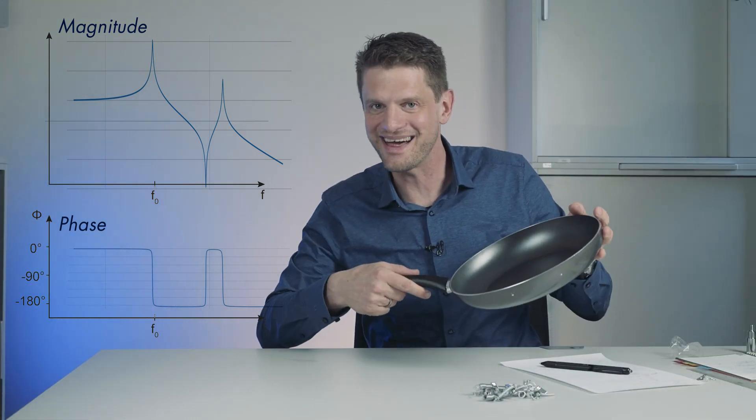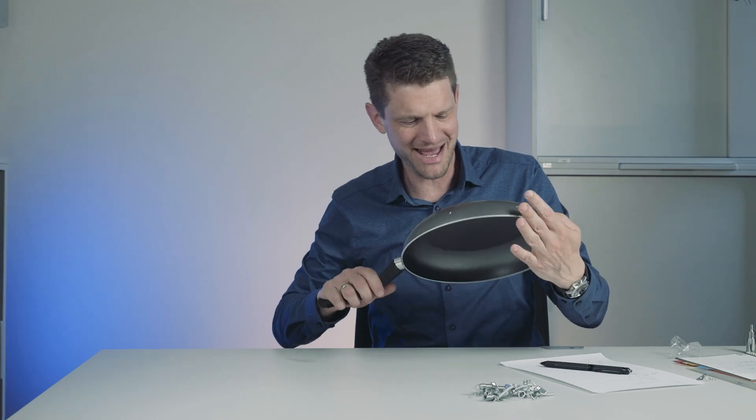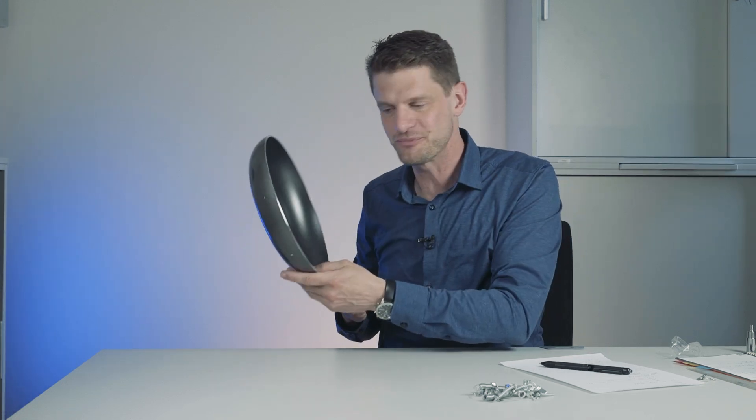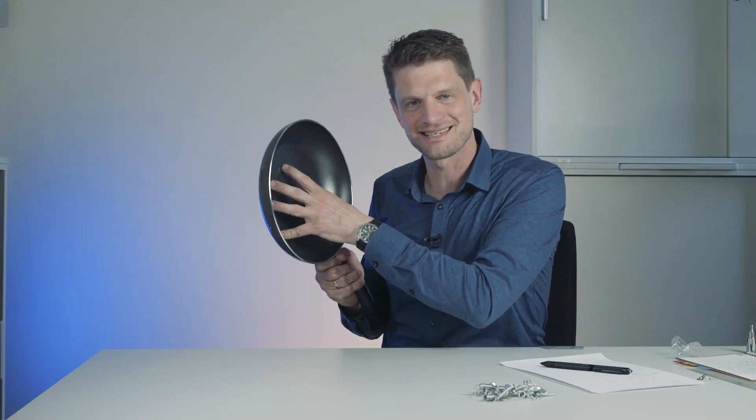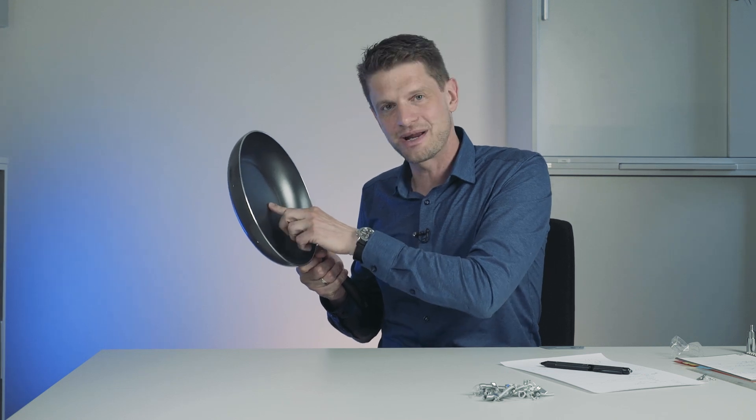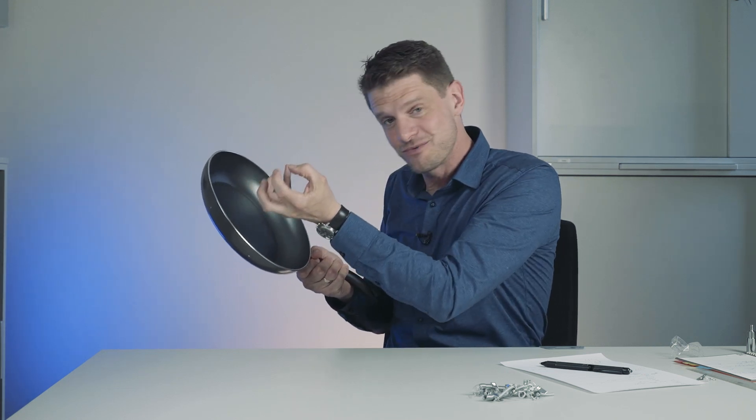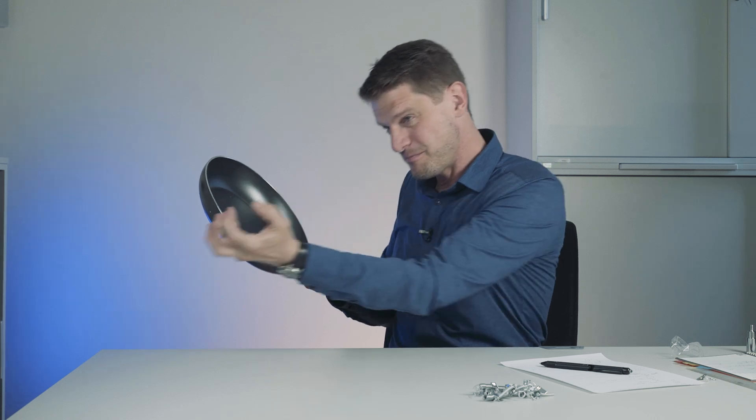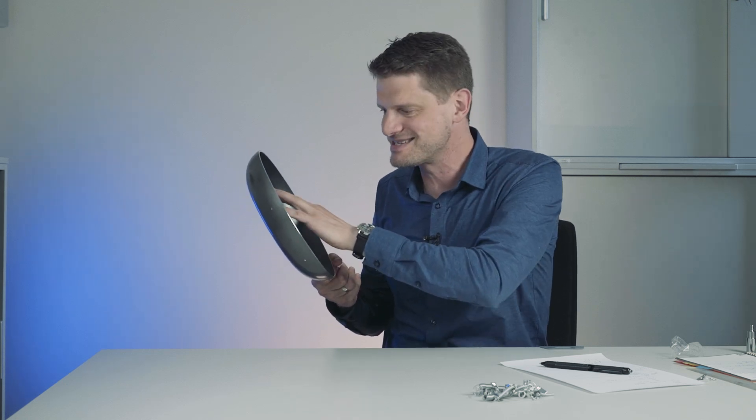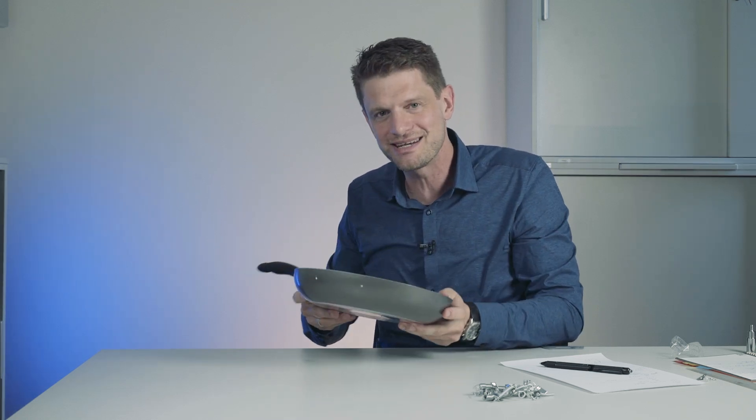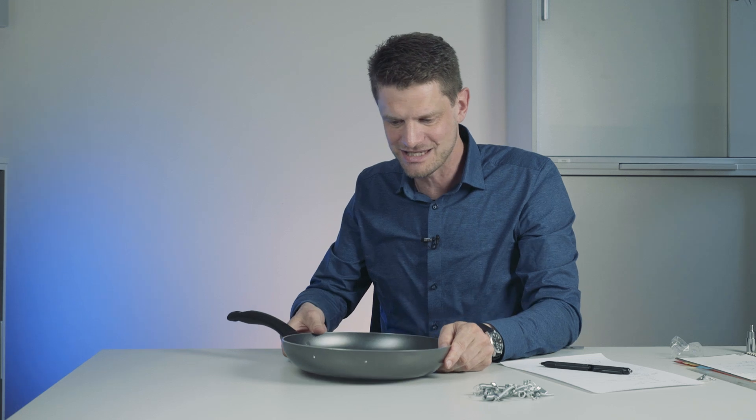And now we come to the pan. So where is the masses and the spring in the pan? Well, actually you have to think every part of the pan has a mass. And if I move it out of the plane, the surrounding area is connected with it with springs because it's a metal. It will pull it back. So if I get out there, it will come back again because of the surrounding. This is a complex grid of masses and springs.